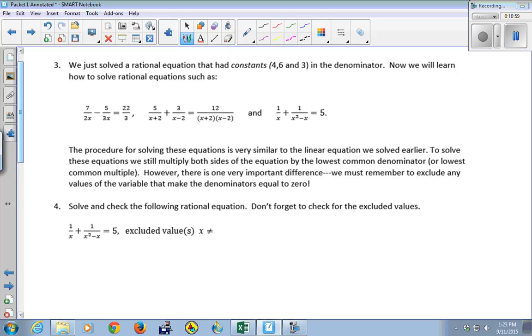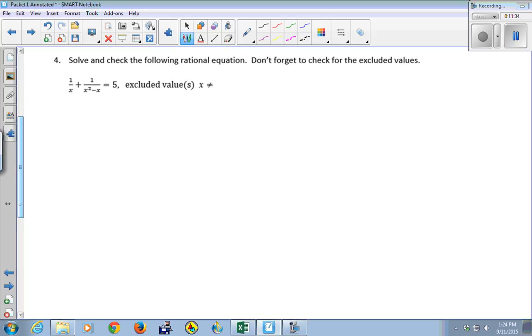Okay. So we've solved a rational equation that had constants. 4, 6, and 3. They're just regular old numbers in the denominators. But now we're going to solve them where the denominators actually have expressions involving x. So it's just going to be the exact same approach, the exact same rules. We're just going to have some x's now. Very similar to before, we're going to multiply both sides of the equation by the lowest common denominator.